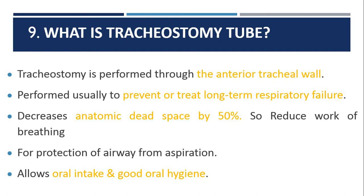The ninth question: what is a tracheostomy tube? To insert a tracheostomy tube, tracheostomy surgery is performed through the anterior tracheal wall. It is performed to prevent or treat long-term respiratory failure. It decreases anatomic dead space by 50%, reducing the work of breathing. It protects the airway from aspiration, allows oral intake and good oral hygiene, and is used for patients requiring long-term mechanical ventilation.